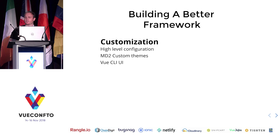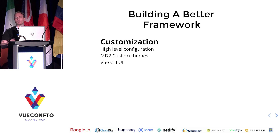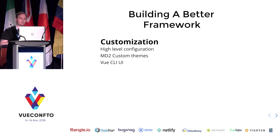The first pillar is customization. We have some good customization options right now, but we're looking to improve that. Some high-level configuration items like icon fonts and language already exist. But if you want to do something like make all of your form components use the outline style, or disable ripples in your entire application, you kind of have to do that on your own — so we're looking to provide some additional high-level configuration for that.